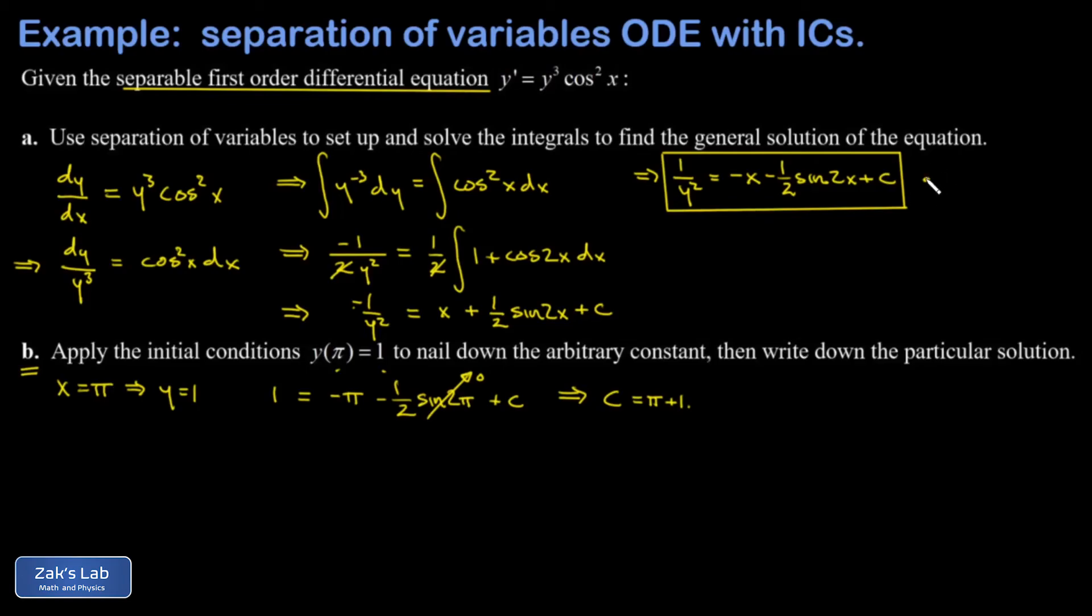We can think of this general solution as a family of curves. I can plug in infinitely many different C's, each one of those producing an implicit curve. But by letting C = π + 1, we're selecting the unique implicit curve that passes through the point (π, 1).